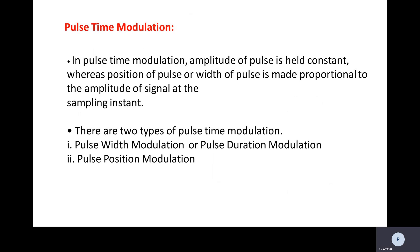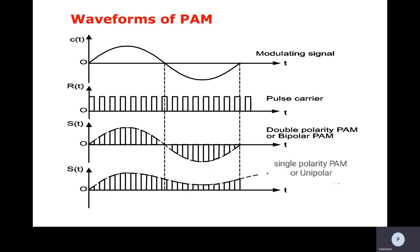PAM has some advantages and disadvantages. The generation and demodulation of PAM is simple. However, noise greatly affects the amplitude of the signal, so PAM has low noise immunity. Also, the power required to transmit a PAM signal is not constant. These are the merits and demerits of PAM.